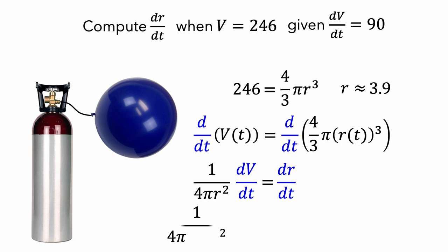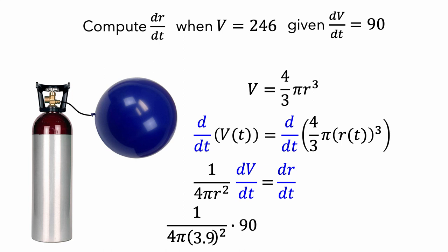Now, since we know that r is equal to 3.9 and dv/dt is equal to 90, we can compute a value for dr/dt. It's 1 over 4 pi times 3.9 squared times 90, which is approximately equal to 0.47 inches per second.